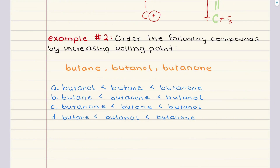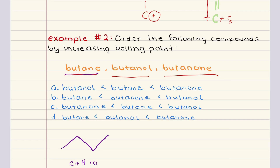Problem two says order the following compounds by increasing boiling point: butane, butanol, and butanone. To solve this, we need to consider the intermolecular forces present in each compound, since boiling point is largely influenced by the strength of these interactions. Butane has a molecular formula of C4H10. It's a simple alkane, meaning it is a non-polar molecule that only experiences London dispersion forces — the weakest type of intermolecular force. Because of this, butane has the lowest boiling point among the three.